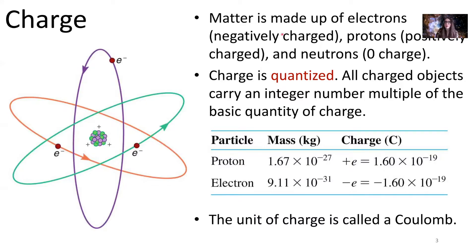Matter is made up of electrons which are negatively charged and protons which are positively charged, and we have neutrons which have zero charge. Here we have an atom. We've got our nucleus in the middle which has neutrons and protons. The protons give the nucleus a positive charge, and then we have electrons that orbit in these orbital shells around the nucleus of the atom, and those electrons have a negative charge.